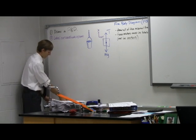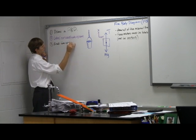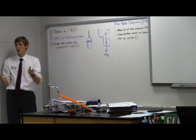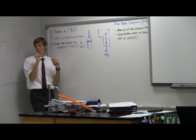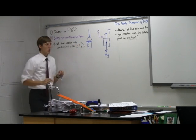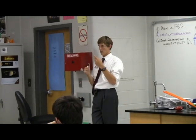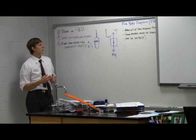Step three: break force vectors into component parts. When you see component parts, think X component and Y component. Those two components are always perpendicular, so we're making a right triangle. I'll draw a little right triangle as a reminder. And I want your component parts to always be dotted lines instead of solid lines — to separate them from the actual vectors. Do we need to break anything into component parts here? No, everything's already pointing in one direction.